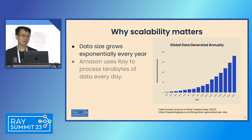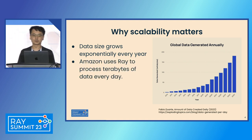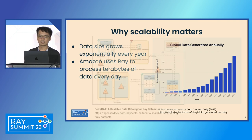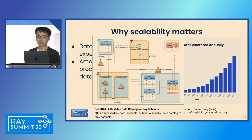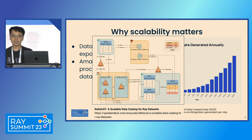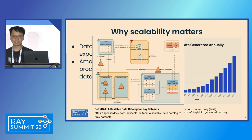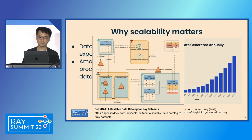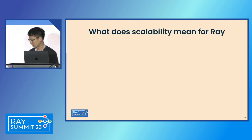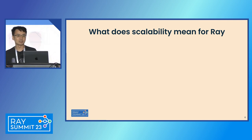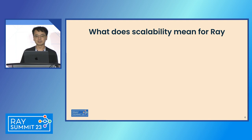Ray needs to scale up to follow this trend too. Amazon nowadays uses Ray to process terabytes of data every day. They have contributed an open-source software called DeltaCat. DeltaCat merges the deltas offline for their data catalog. Now we know this is important — the model is becoming bigger and bigger, we need more computation, and data generated every year grows exponentially.